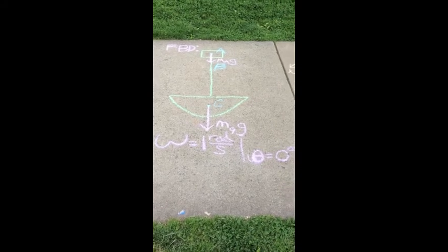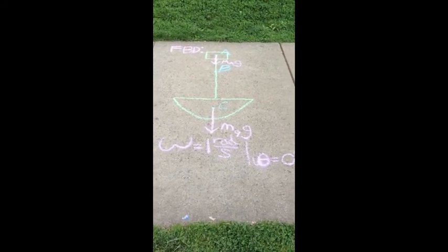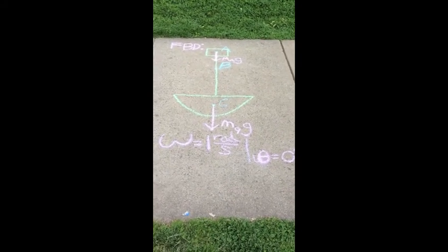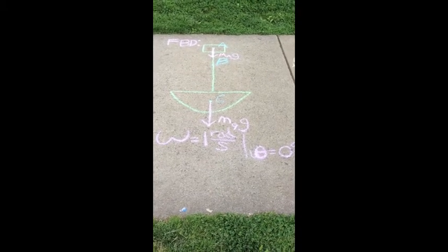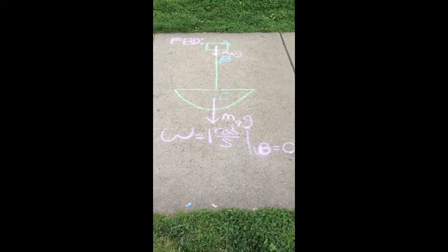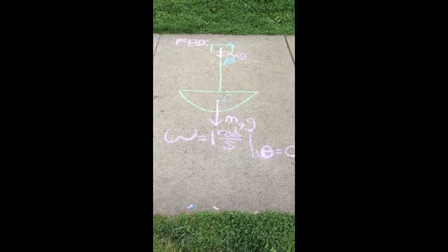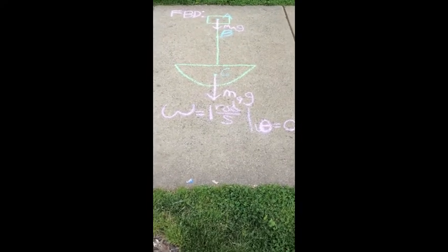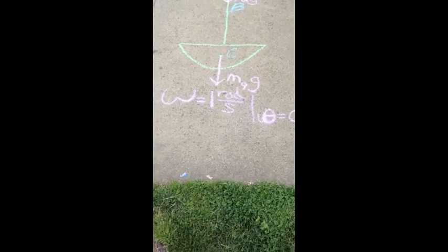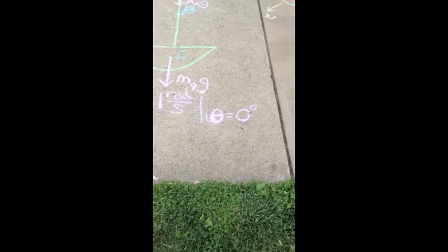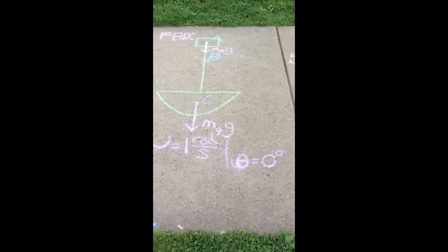Right here we have our free body diagram with our point mass at A and our gondola at G. It's all rotating about B. You see the forces due to the weight at A and G. We have omega equal to 1 radian per second when theta equals 0 degrees, which is this position right here.